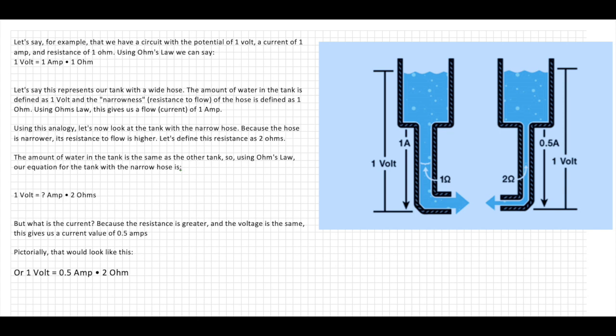Using Ohm's law this gives us a flow or current of one amp. Using the same analogy, let's look at the tank with a narrow hose. Because the hose is narrower, its resistance to flow is higher. Let's define this as a resistance of two ohms. But what's the current?